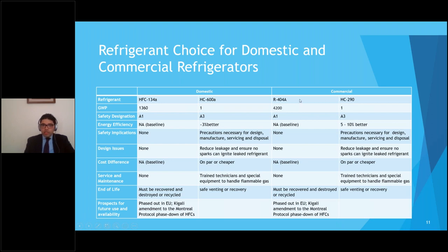When we look at commercial applications, we replace R-404A with hydrocarbon 290 (propane). There is a 4,000-fold reduction in global warming potential, but again we get the issue of flammability. Propane is usually 5–10% better than R-404A. Some safety and design precautions are needed. The cost is comparable and may even be cheaper in some cases, especially with higher MDI facilities that can work with compressor suppliers to get competitive rates. R-404A is being phased out in the EU and phased down by the Montreal Protocol.